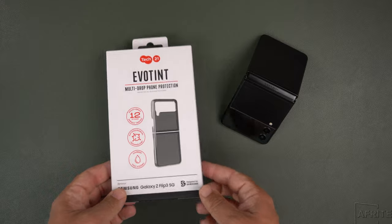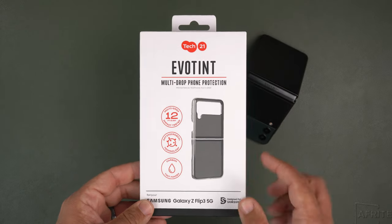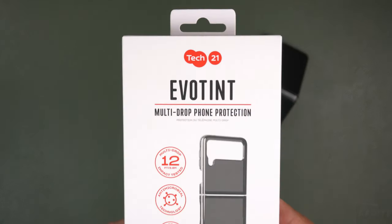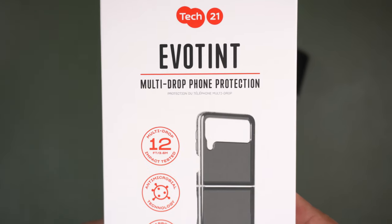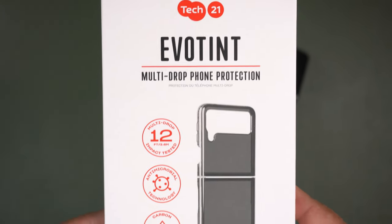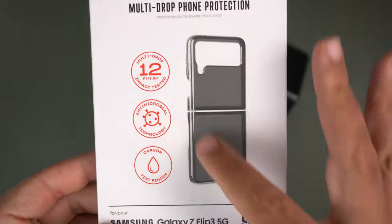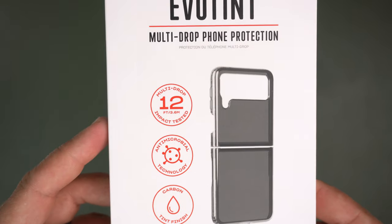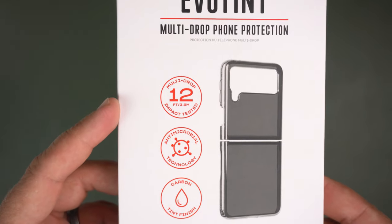The box is pretty simple with the new Tech 21 branding at the top. It says Evo Tint Multi-Drop Phone Protection. There's a picture of the case, and it says it's impact tested from 12 feet, so you're getting some really good drop protection.